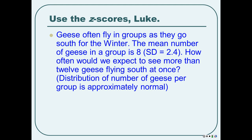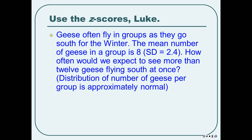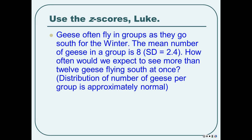Let's say geese often fly south and the mean number of geese per group — which I made up off the top of my head — is 8 with a standard deviation of 2.4. The unit of observation is a group of geese. You've measured hundreds of groups: this group has 12, this group has 5, this group has 15, this group has 2, etc. So the mean is 8 and the standard deviation is 2.4. Now 'how often' is probability. As soon as I say 'how often,' you should think: I need to find some area under the normal curve. So how often would we expect to see more than 12 geese?